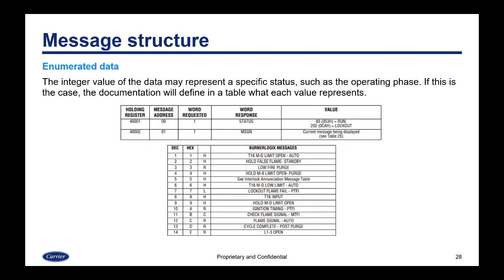Then there is enumerated data, which is very common. The integer value of the data may represent a specific status such as the operating phase. If this is the case, the documentation will define in a table what each value represents. In the example shown, the first register shows the status, and the table below shows what each value represents as a status for a burner logic message.